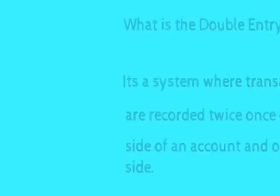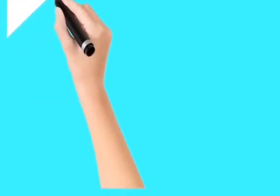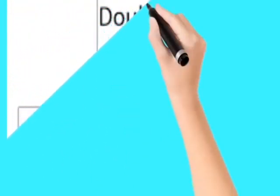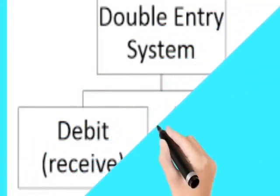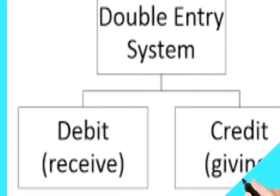In any business transaction, two or more accounts are affected. You have a receiver and a giver — in other words, something is coming into the business and something is going out of the business. The double entry system shows a debit side and a credit side. Any account that is receiving, we will debit; any account that is giving, we will credit.